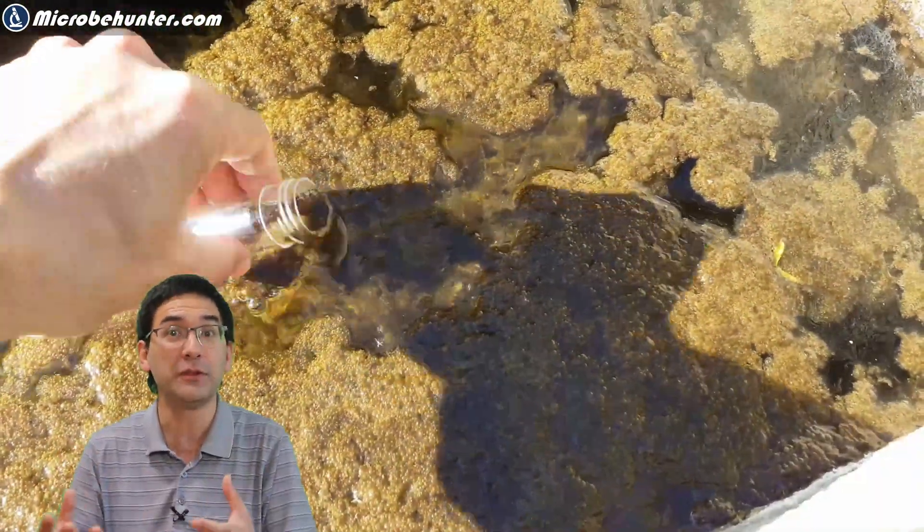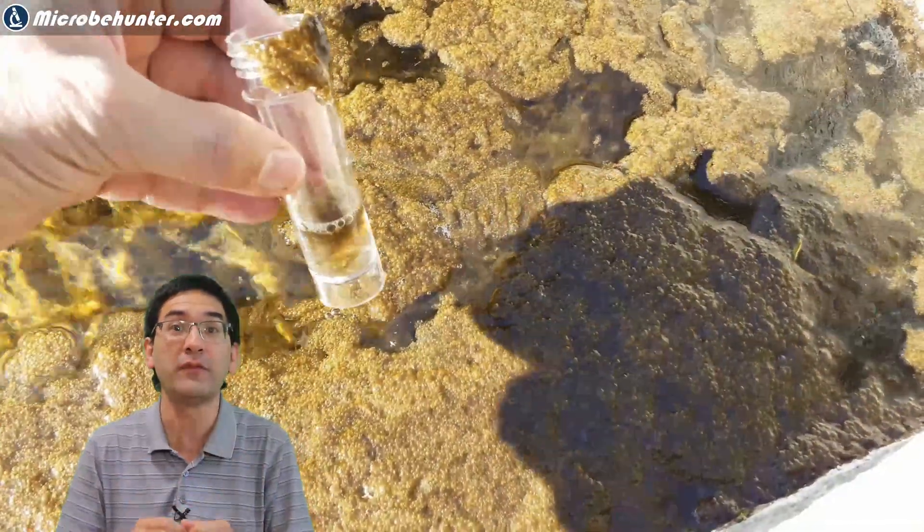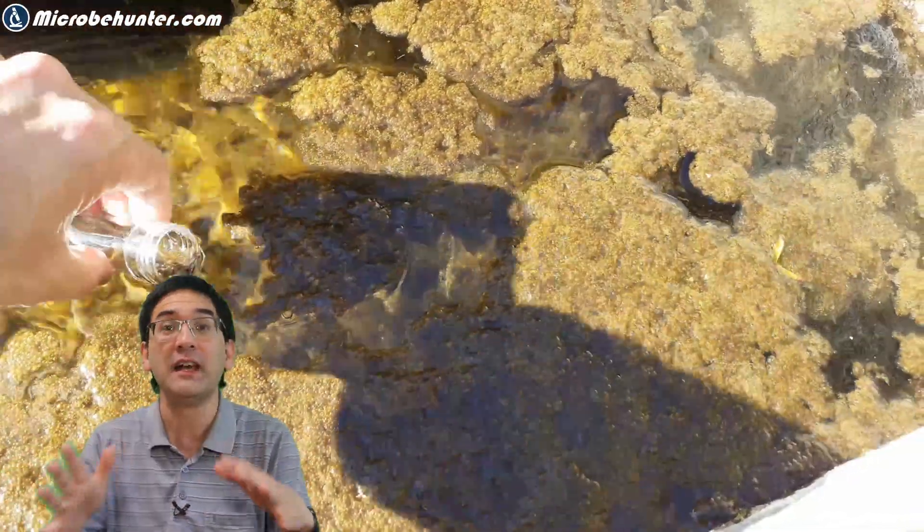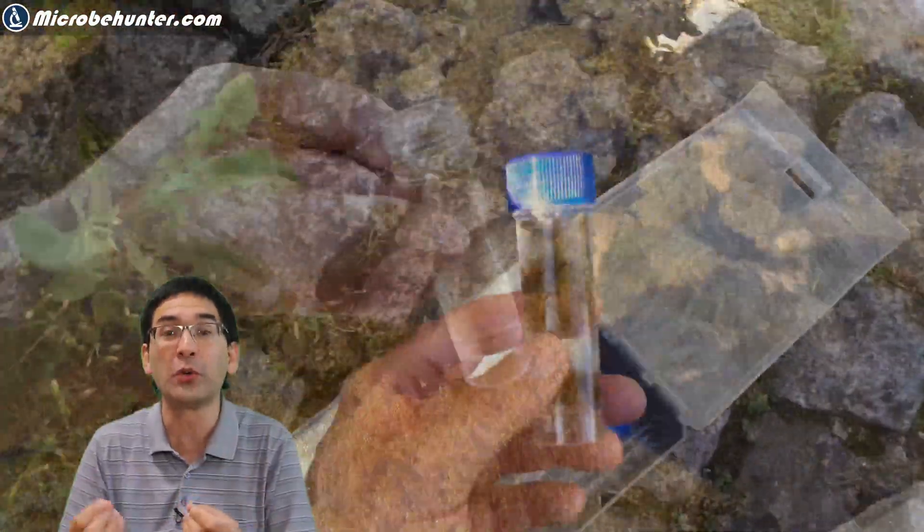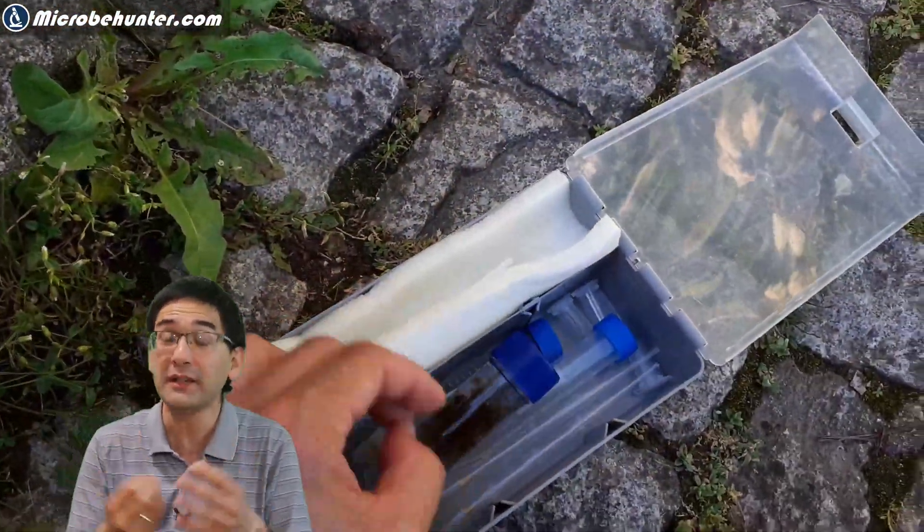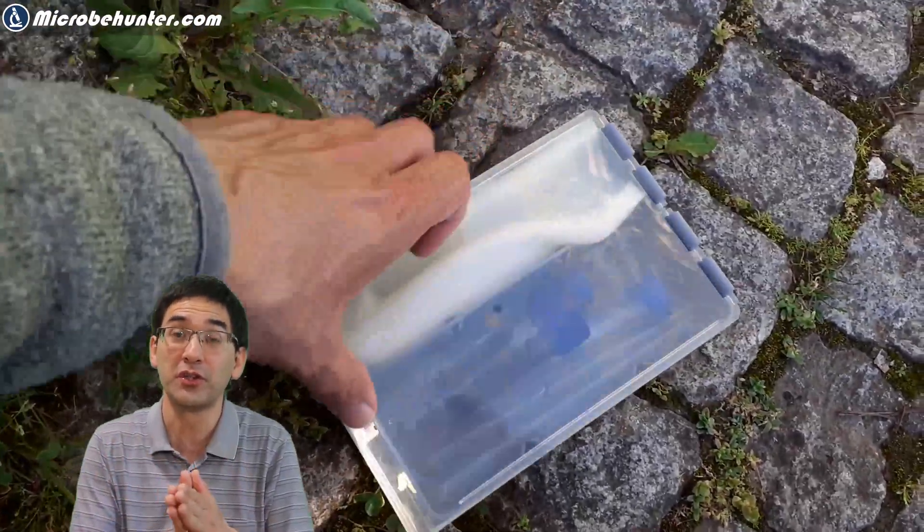If you want to collect microbes, I highly recommend that you collect not the water itself but rather the solid material that you find growing on the water surface and also on the side of the water fountain, because many microorganisms like to be connected to a solid surface.